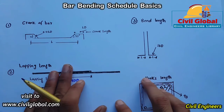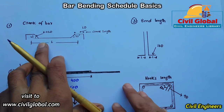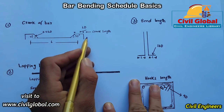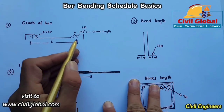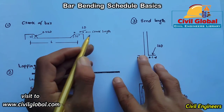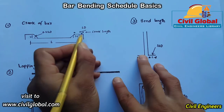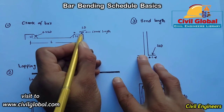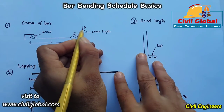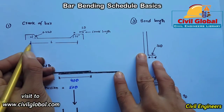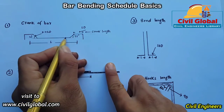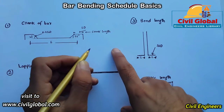The first point is the crank bar. When you want to make the bar bending schedule for a beam, keep in mind what a crank bar is. At the end of the beam, we provide the crank length. To calculate the crank length, we use the formula: L×D, where L is the length of the beam or span, and D is the diameter of the steel being used in that beam.